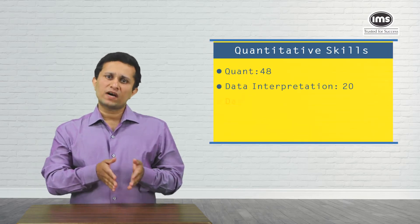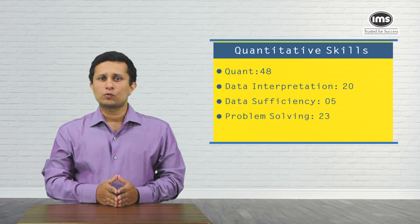Contrary to the earlier breakup, which used to be 20 questions for DI, 6 for DS, and 22 for problem solving, this year the breakup was 20 for DI, 5 for DS, and 23 for problem solving.